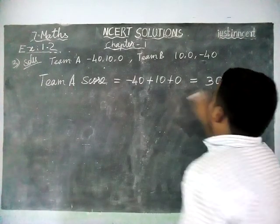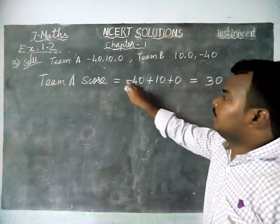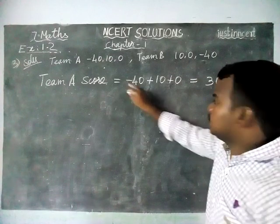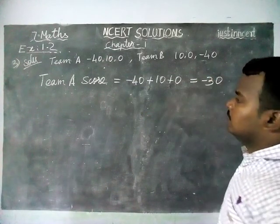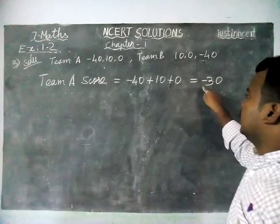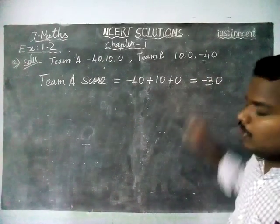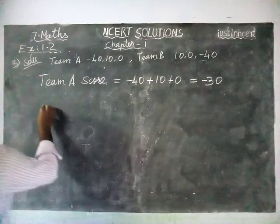The difference between 40 and 10 is equal to 30. The greatest number here is 40, and in front of 40 there is a minus sign, so the answer is minus 30. So team A scored minus 30 marks.